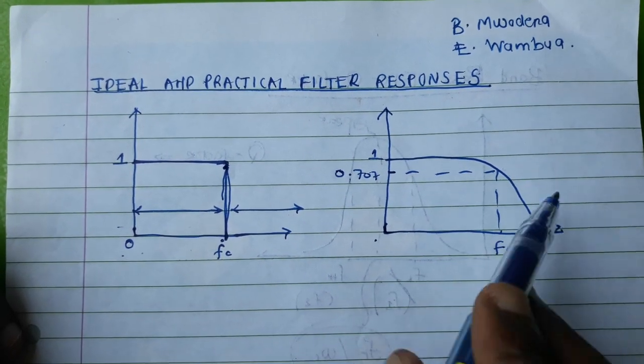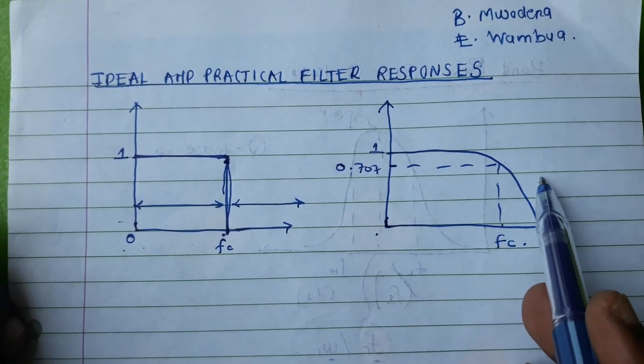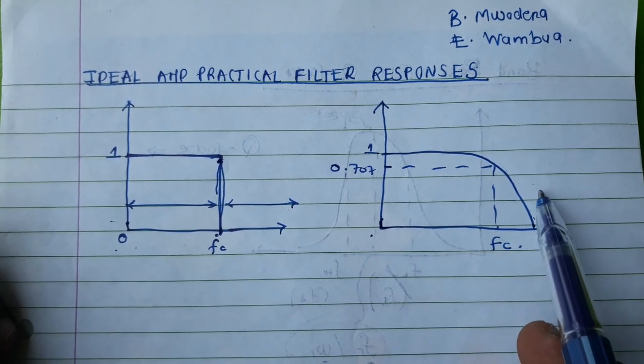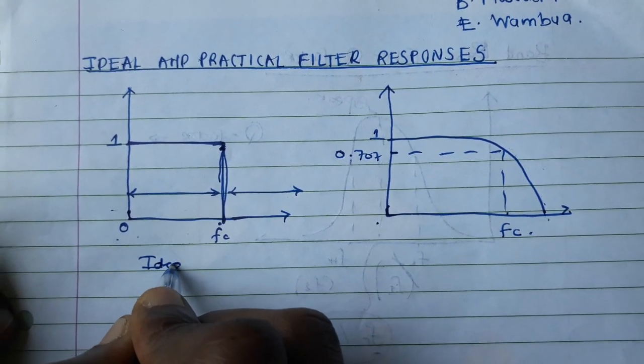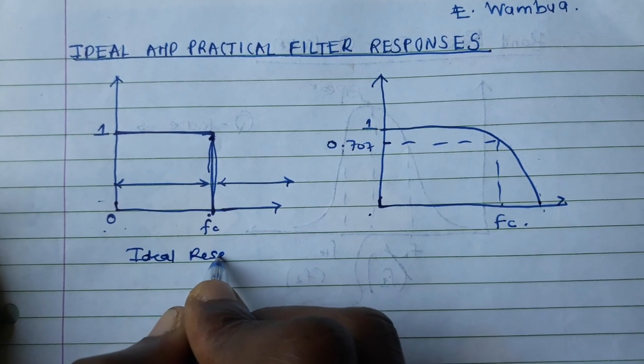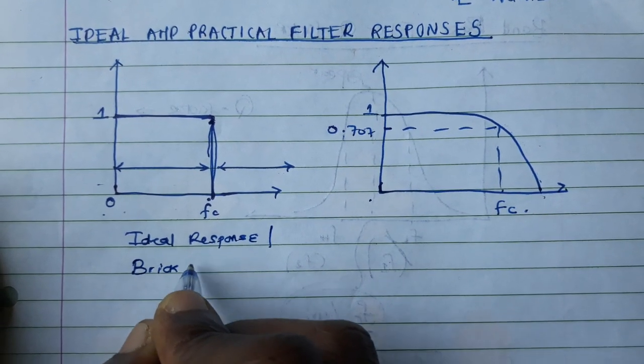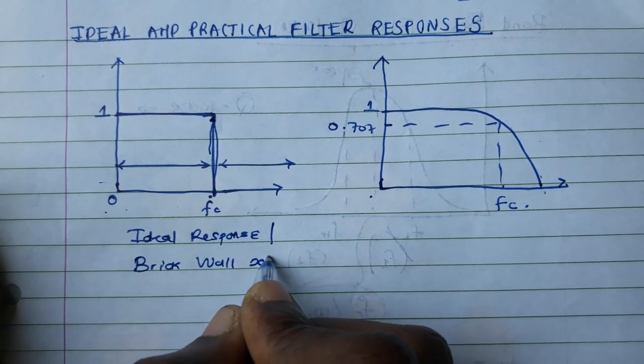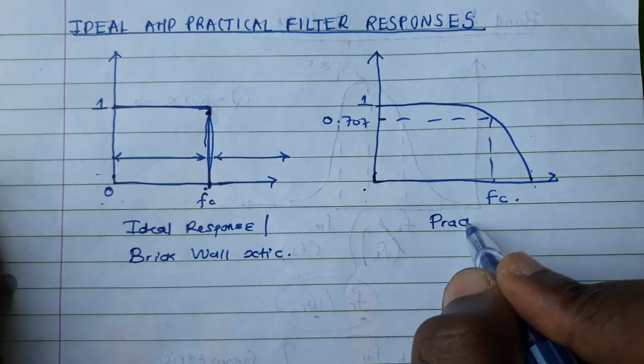We have some time, and that means some of these unwanted frequencies are available in your system. So this is what we call the ideal response or the brick wall characteristic, and this is what we call the practical response.